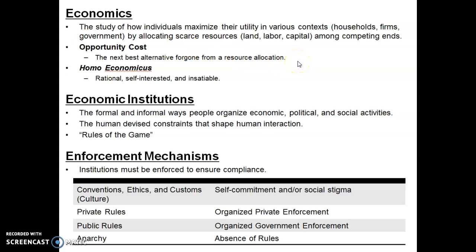Every decision we make comes with an opportunity cost, and we act in a consistent way — what we call homo economicus. In making economic decisions every day, we act rationally, meaning we try to improve our situation. We act in a self-interested manner, using our own assessment of what's best for us. And we operate in an insatiable manner — no matter how much we have, we always want more.